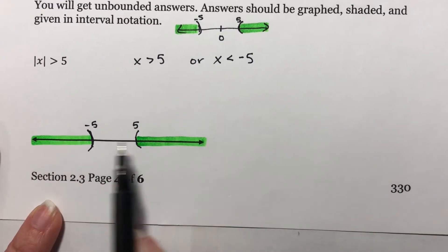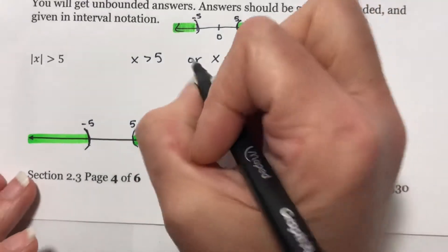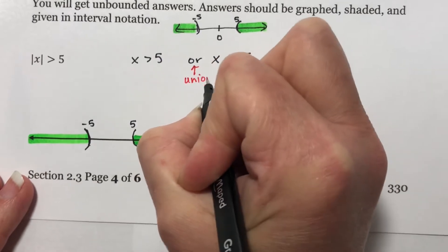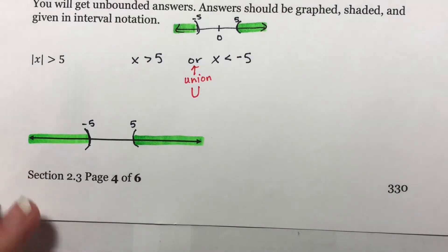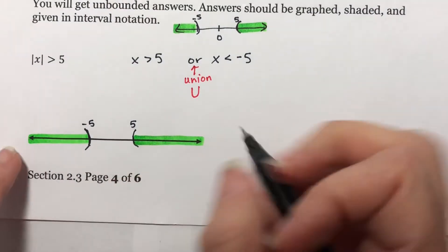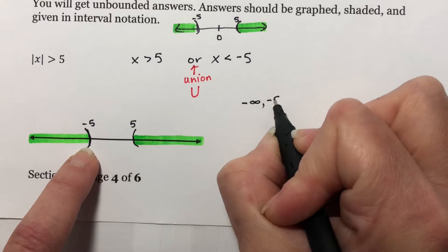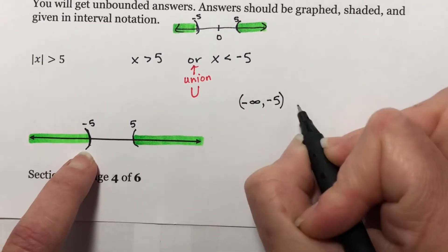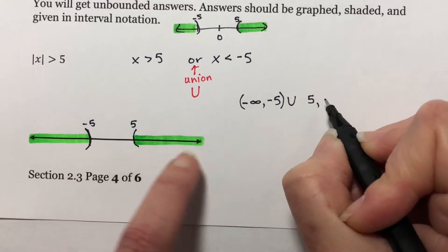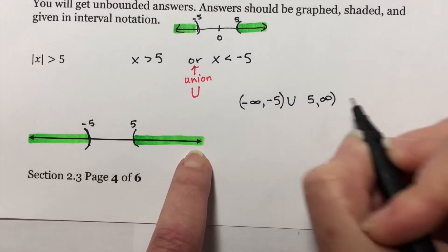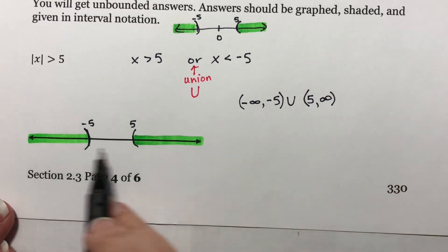Writing your interval notation is a little trickier here because you have to describe each interval individually. And more than that, you have to recognize that this is an OR, which means it is a union. So this interval's left-hand boundary is negative infinity, comma, the right-hand side is negative 5. Infinities always get parentheses, and this has a parenthesis. Union. Now this one: its left-hand boundary is 5, it goes up to positive infinity. Infinities always get parentheses; the 5 had a parenthesis. So this is your answer in interval notation, here is your answer graph.